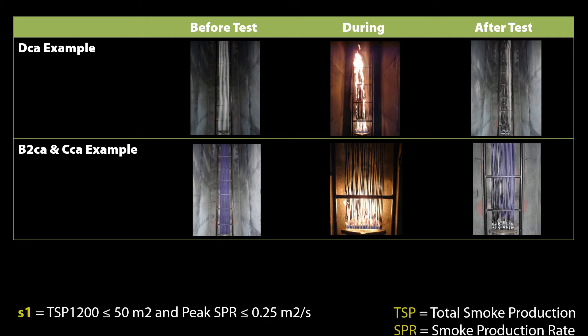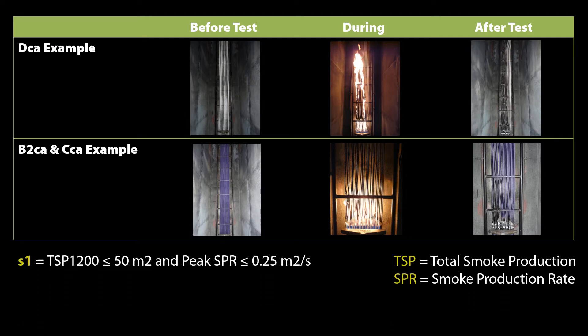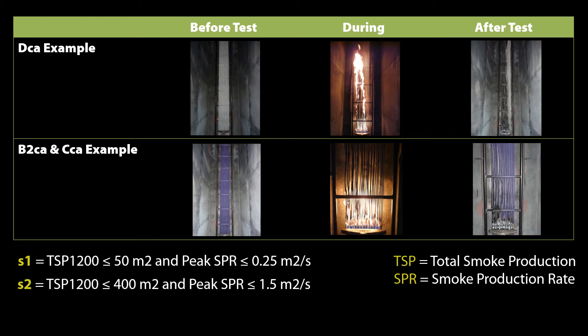The smoke production classification has three levels. S1 has the following limits: total smoke production of 50 square meters with a peak smoke production rate of less than 0.25 square meters per second. S2 is less than 400 square meters at a rate of no more than 1.5 square meters per second. Lastly, S3 is very simple — it does not meet either S1 or S2.